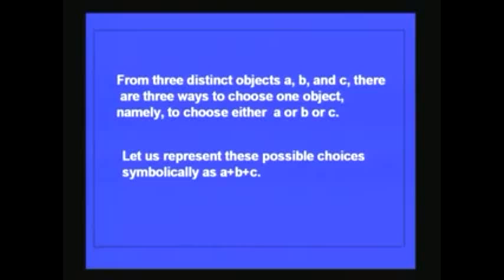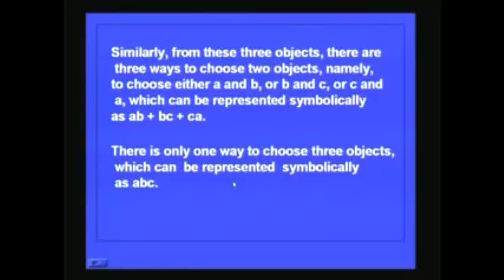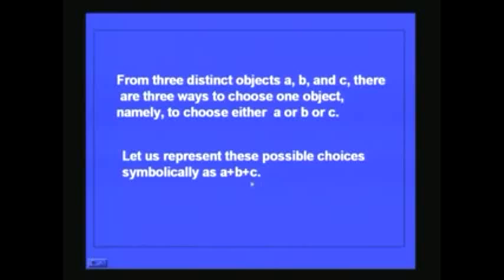From three distinct objects A, B and C there are three ways to choose one object — namely to choose either A or B or C. Let us represent these possible choices symbolically as A plus B plus C. So if you have three objects A, B, C and you want to select one of them, you can choose A or you can choose B or you can choose C, which you represent as A + B + C.